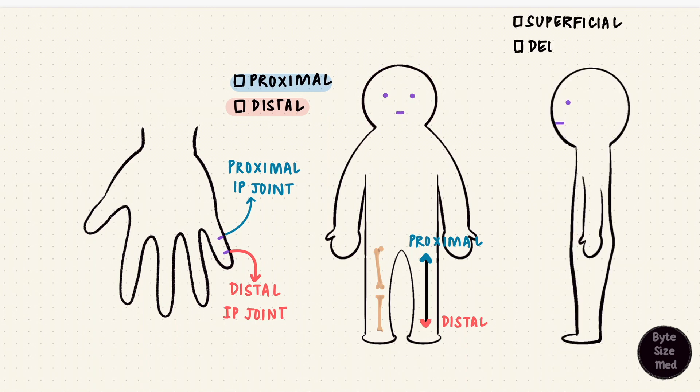Superficial and deep. These are easier. Closer to the surface, more superficial. That's why there's superficial fascia and deep fascia, which would be closer to the body cavities. But again, it's relative. Superficial to what? Deep to what? It's how you use those terms in sentences.